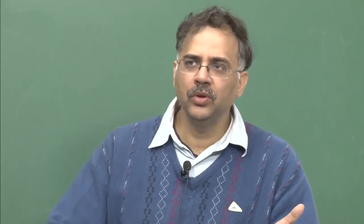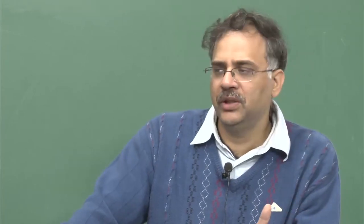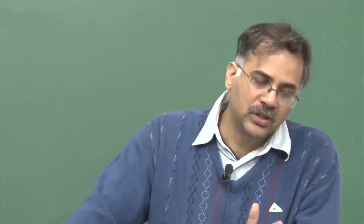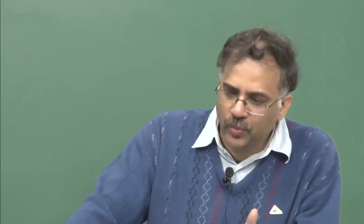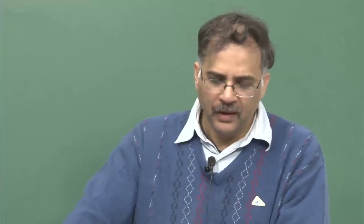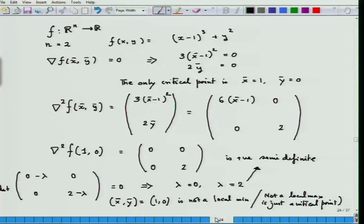We have spoken about the fact that if the Hessian matrix at a given point — a point which is a critical point — is positive definite, then we can say that this point is a strict local minimum. We have demonstrated in the last class an example that if we do not have positive definiteness, maybe just positive semi-definiteness, then it is not at all clear whether this point is a local minimum or not. In fact, that particular example we did in the last class — this point is not a local minimum.